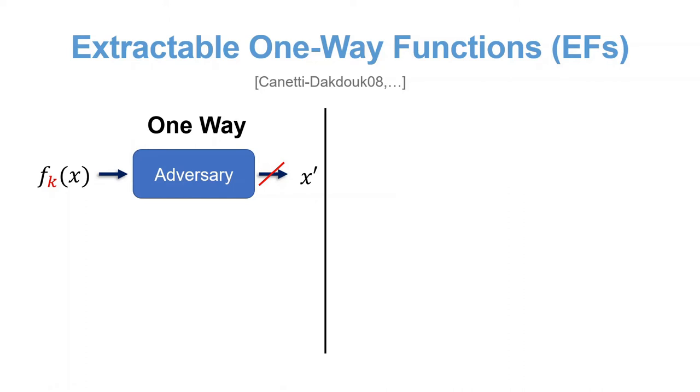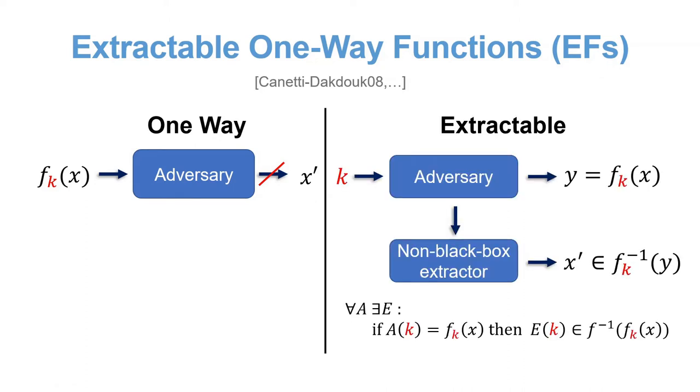Second property is extractability, meaning that for any efficient adversary that given a key produces an image, there exists an efficient extractor that given the same key extracts some pre-image with very high probability. This intuitively captures the idea that it is hard to sample an image without knowing a corresponding pre-image.